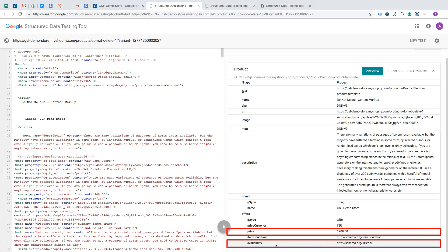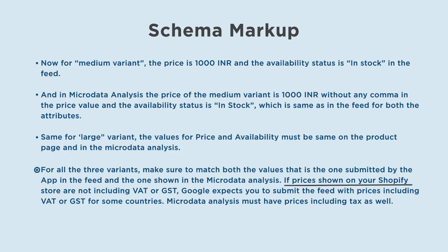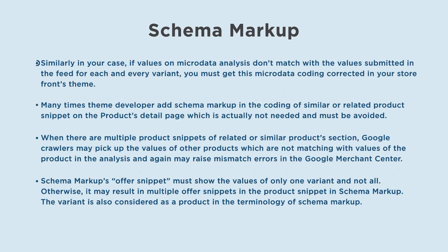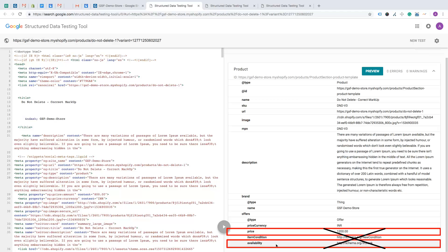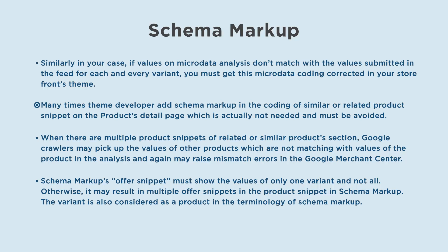Make sure to match both the values submitted by the app in the feed and the one shown in the microdata analysis. If the prices shown on your Shopify store do not include VAT or GST, Google expects you to submit the feed with prices including VAT or GST for some countries, and microdata analysis must have prices including tax as well. If values in microdata analysis don't match values submitted in the feed for each variant, you must get this microdata coding corrected in your storefront's theme.